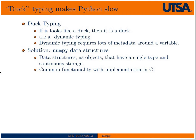So if you haven't figured it out, Python is pretty slow in doing pure numerics. It's much slower than C, sometimes maybe ten times as much. And it has to do with the dynamic typing or duck typing. So in duck typing, if it looks like a duck, then it is a duck. It's also known as dynamic typing.